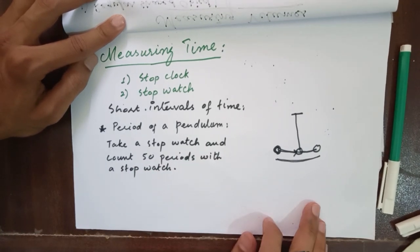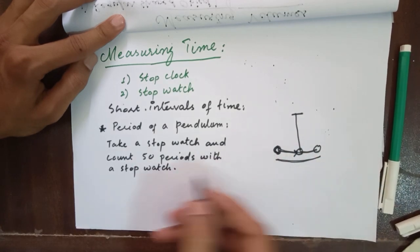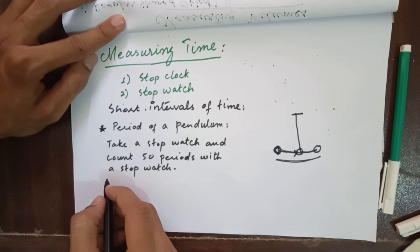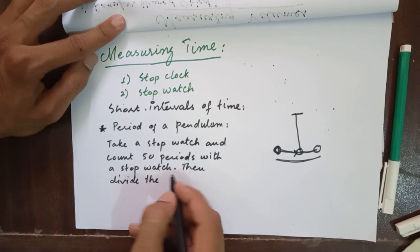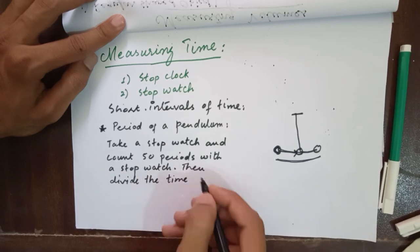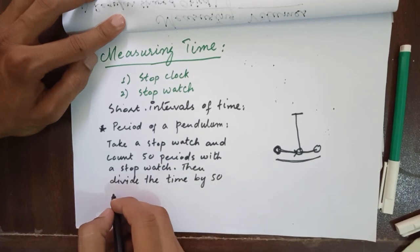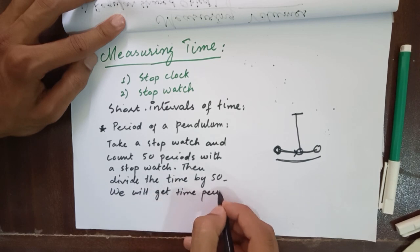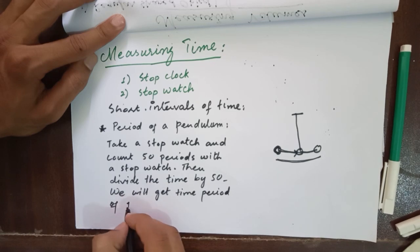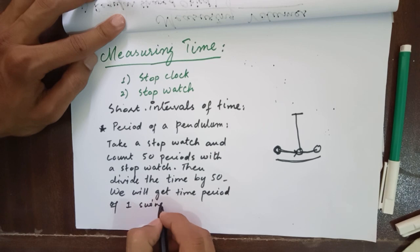Counting 50 periods means we will take the reading of 50 periods from the stopwatch, how long it takes to complete 50 periods of this pendulum. Then, divide the time by 50. We will get the time period of one swing of the pendulum.